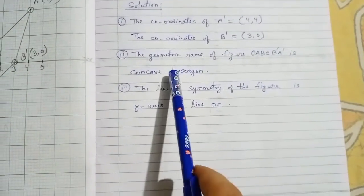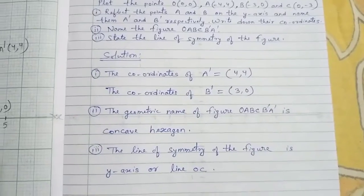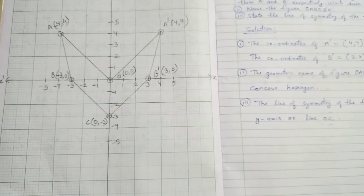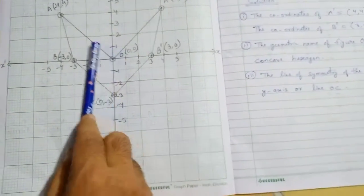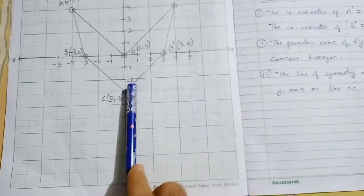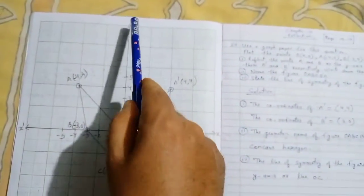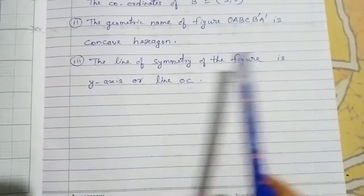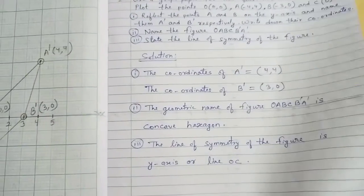Question 3: State the line of symmetry of the figure. A line of symmetry divides the figure equally into two halves. This line divides the figure into a first half and a second half equally, so OC is the line of symmetry — or equivalently the entire y-axis is the line of symmetry. You can write either answer.